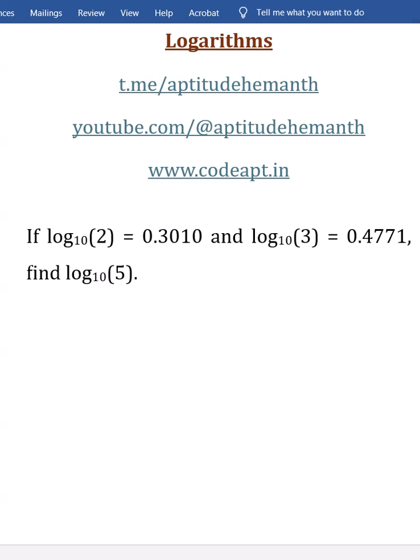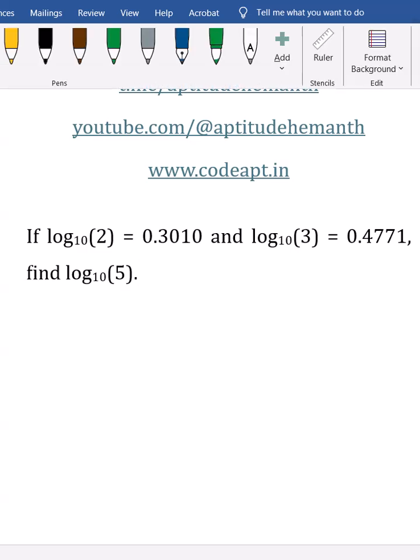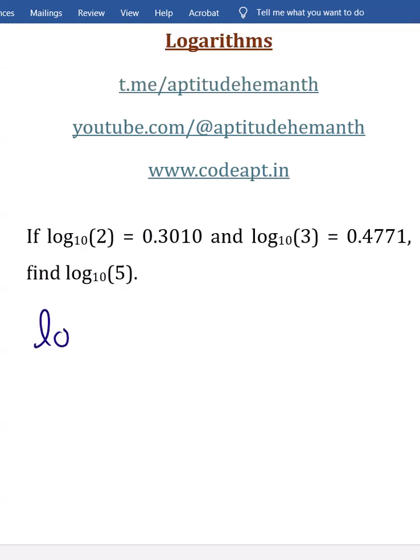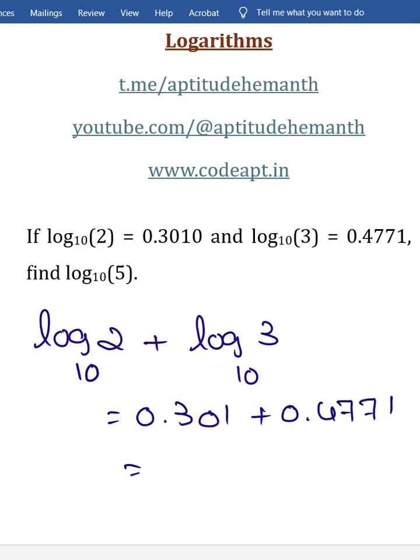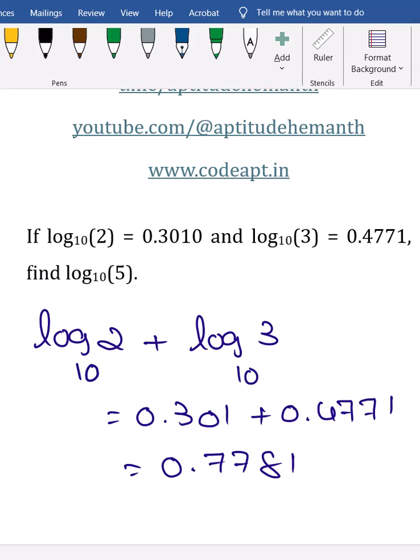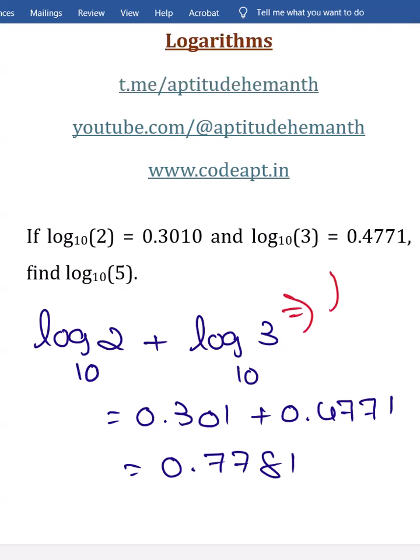Many people will feel this question is very easy and many will solve like log 2 plus log 3 with base 10. I solve this. I got this as 0.301 plus 0.4771. So answer is nothing but 0.7781. But for your kind information my dear friends, log 2 plus log 3 is nothing but equal to log 2 into 3.